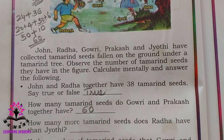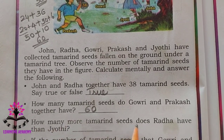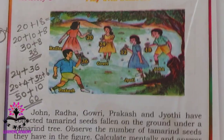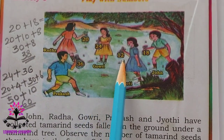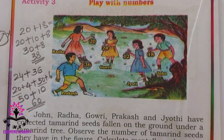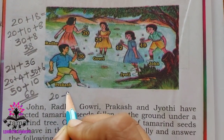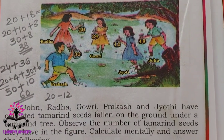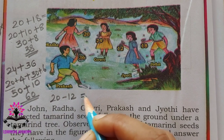The next question: how many more tamarind seeds does Radha have than Jyoti? Radha has 20 and Jyoti has 12, so it is 20 minus 12. The answer is 8.